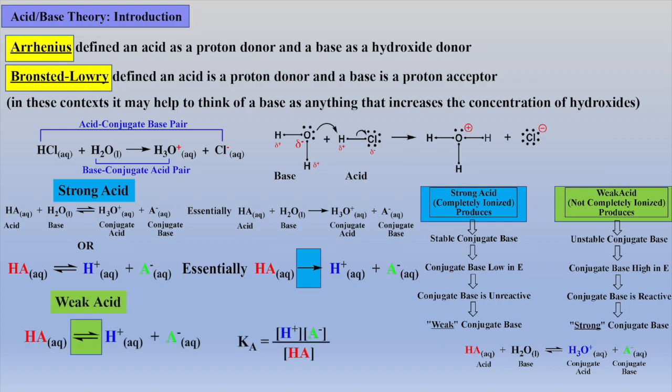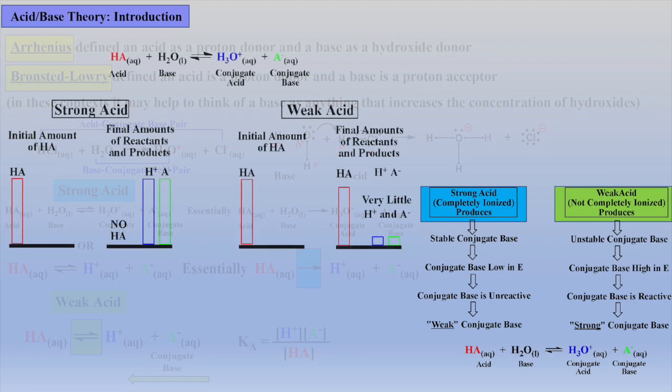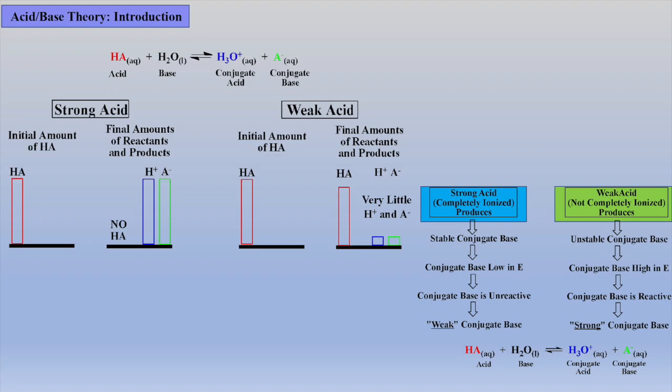While a weak acid equilibrium does not lie far to the right, and a dynamic equilibrium is established due to the unstable conjugate base wanting to take steps towards stability back towards reactants. These differences in acid dissociation constants, Ka, that measure the extent of dissociation for weak acids are discussed in detail in part 3 of our acid base reviews. In addition, it may help to visualize the difference in dissociation between a strong and weak acid via a bar graph. For a strong acid, there is essentially 100% dissociation and no reactants left. And for a weak acid, there is quite a bit of reactant present at equilibrium.